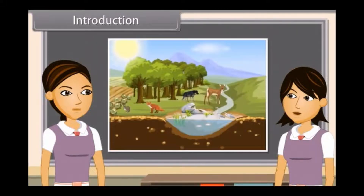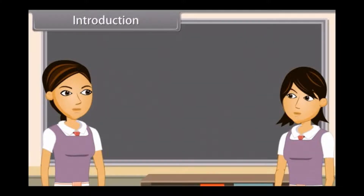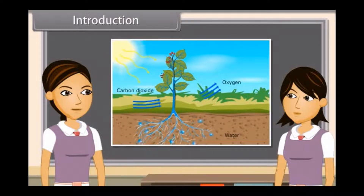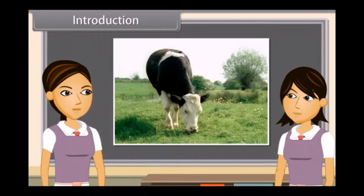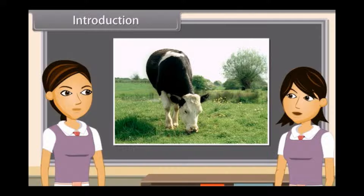But when we observe it closely, we find that all the living things on earth actually depend on the sun for their food, directly or indirectly. Plants use the energy of the sun and prepare food by photosynthesis, which is utilized by them to maintain their life. In turn, these plants are eaten up by herbivores and omnivores as food, and the carnivores eat herbivores as their food. In this way, it is energy from the sun which provides food for plants and animals.